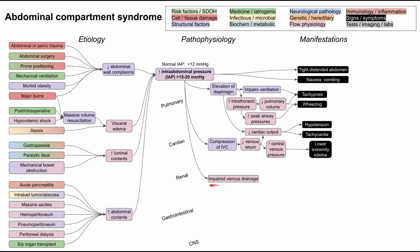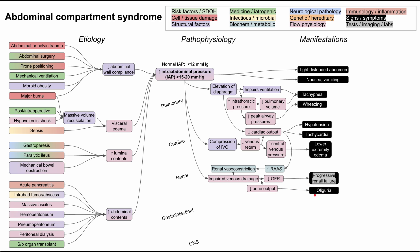The kidneys are affected through impaired venous drainage due to increased intra-abdominal pressure. Decreased cardiac output also activates the renin-angiotensin-aldosterone system, leading to renal vasoconstriction, which further impairs venous drainage, decreases glomerular filtration rate, and reduces urine output. This can progress to kidney failure, with oliguria or anuria in severe cases, trackable by rising creatinine and BUN levels.